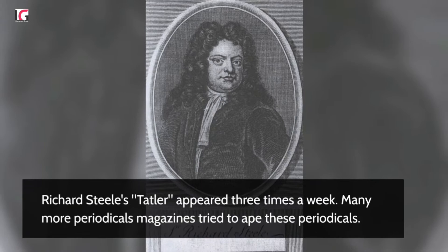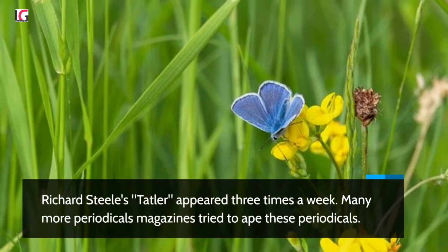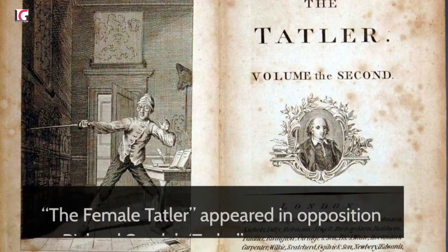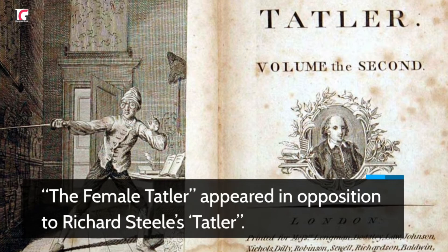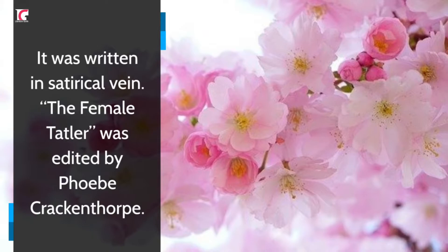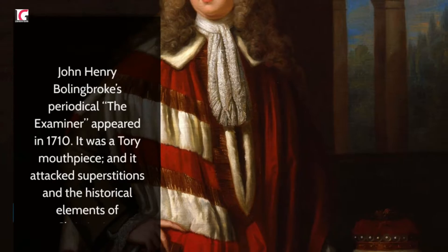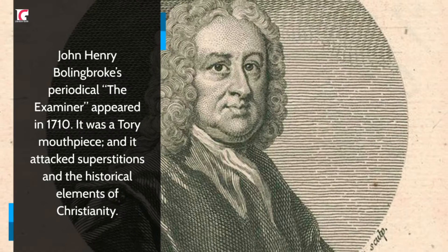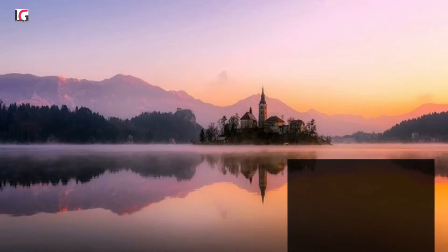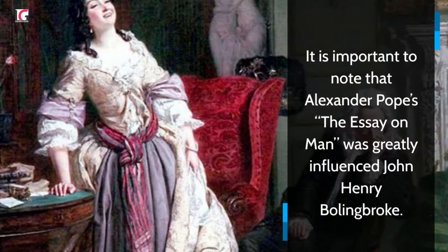Many more periodicals and magazines tried to imitate these periodicals. The Female Tatler appeared in opposition to Richard Steele's Tatler, written in satirical vein, and was edited by Phoebe Crackenthorpe. John Henry Bolingbroke's periodical The Examiner appeared in 1710. It was a Tory mouthpiece and it attacked superstitions and the historical elements of Christianity. It is important to note that Alexander Pope's The Essay on Man was greatly influenced by John Henry Bolingbroke.